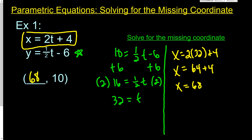So in this set of parametric equations, one of the points on there is going to be 68 comma 10. And that happens when time equals 32. All right, so let's look at a couple more examples.